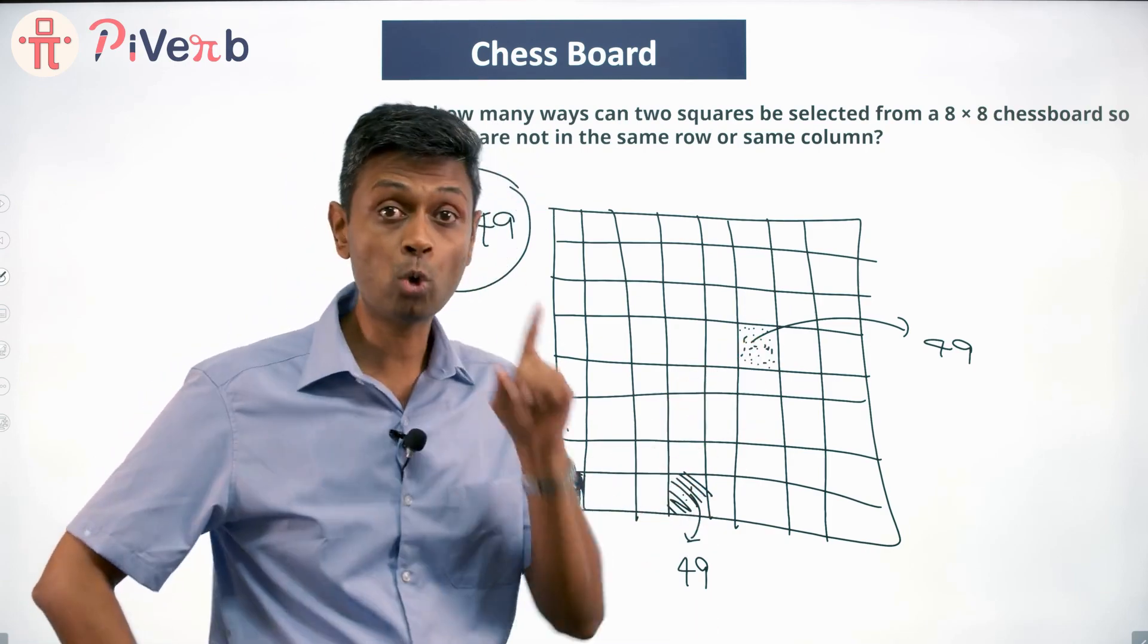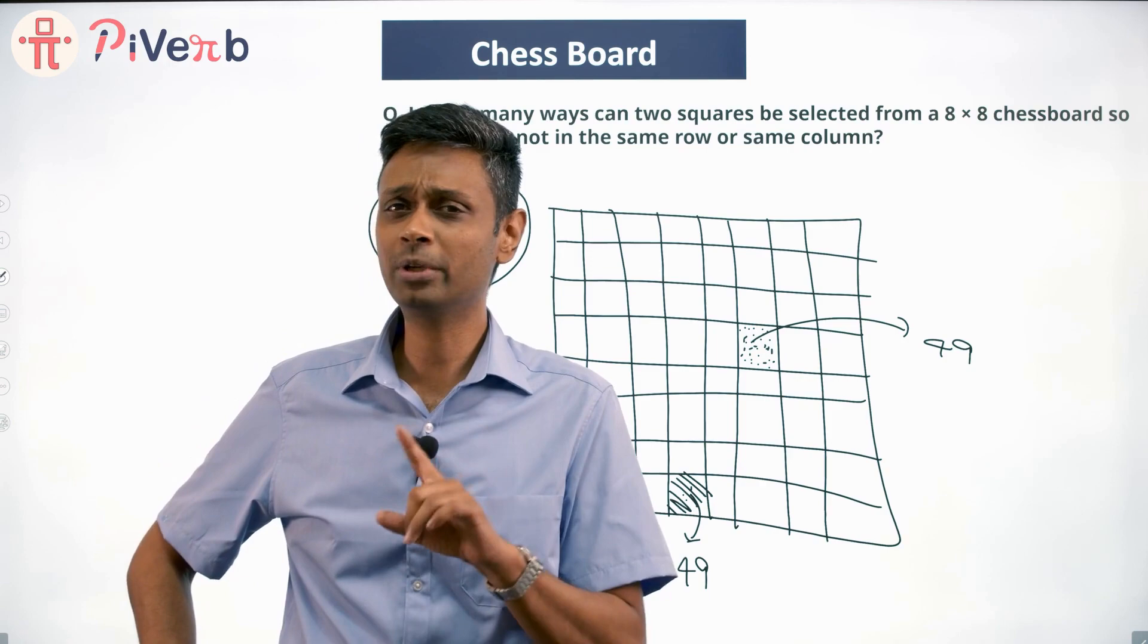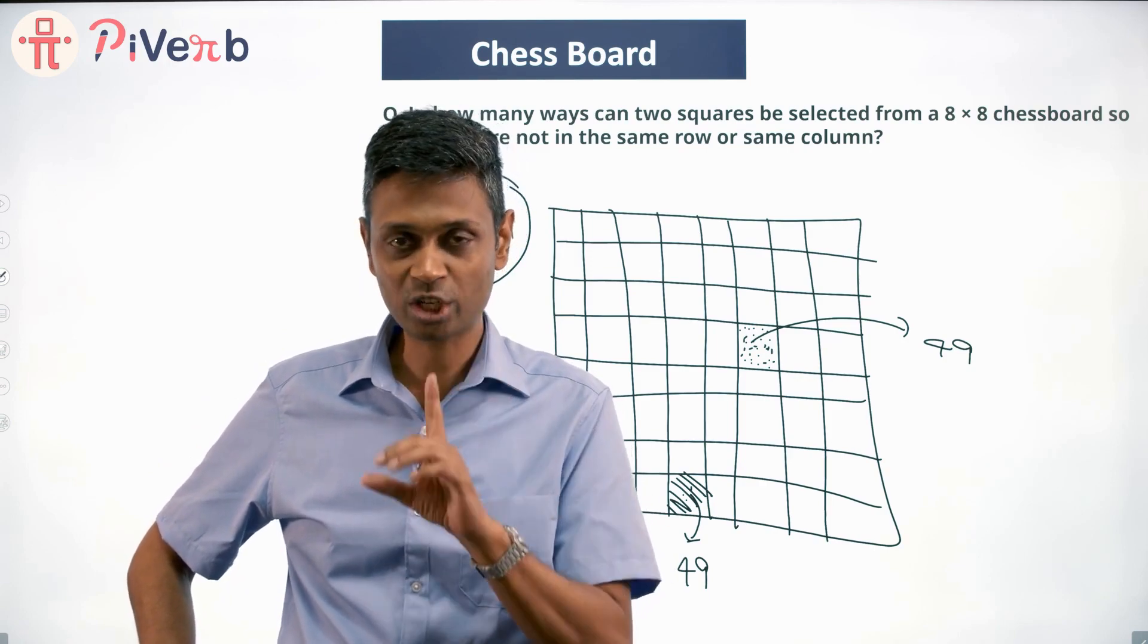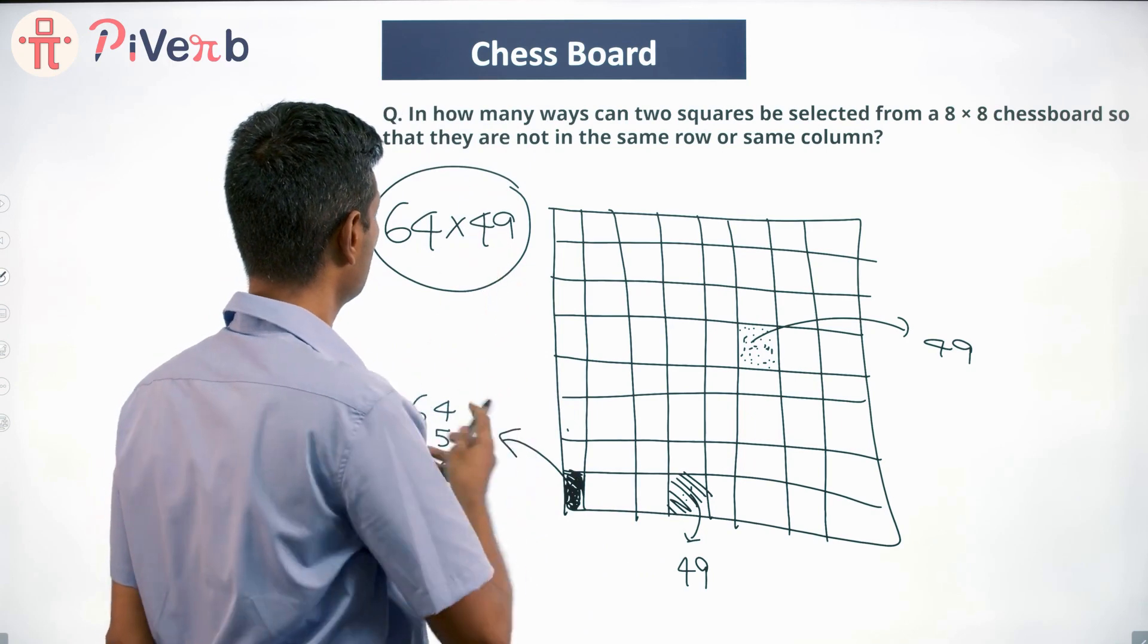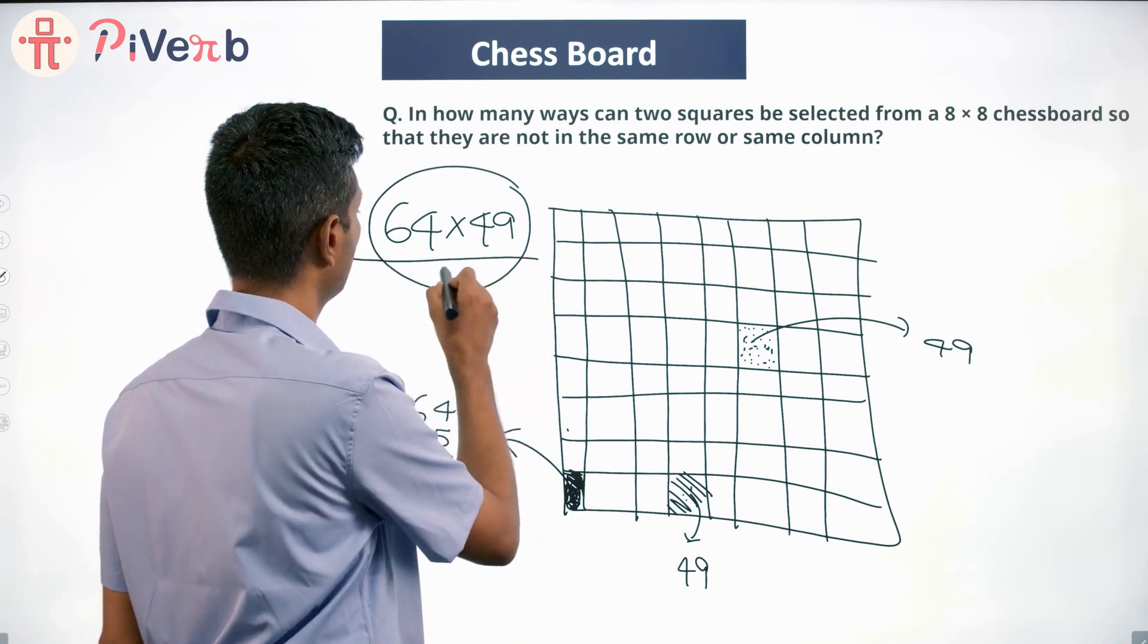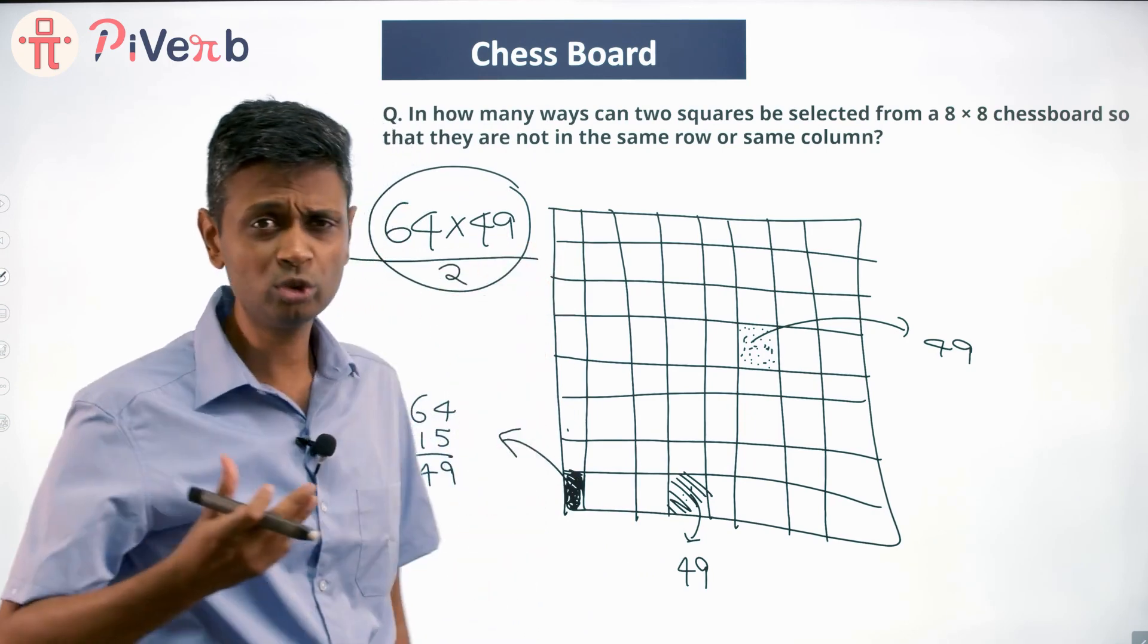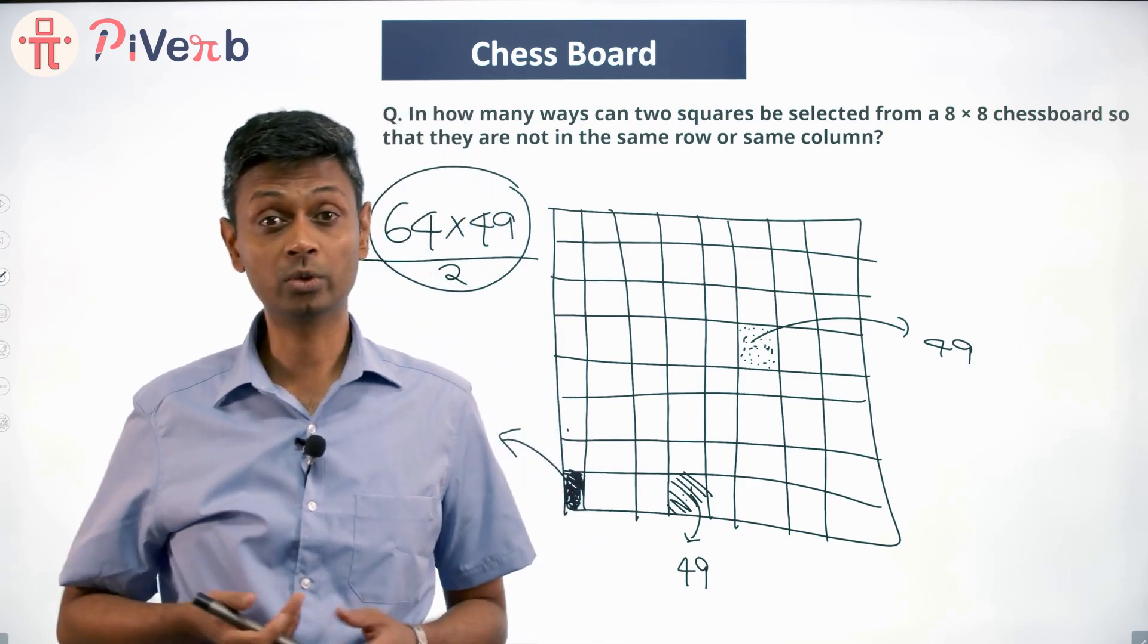I can select this as my first square, this as my second, or this as my first square, this as my second. Both will get counted and I shouldn't be counting both. I need to have one selection which is two squares which are not in the same row or same column. So my answer is not 64 × 49, it's 64 × 49 ÷ 2.